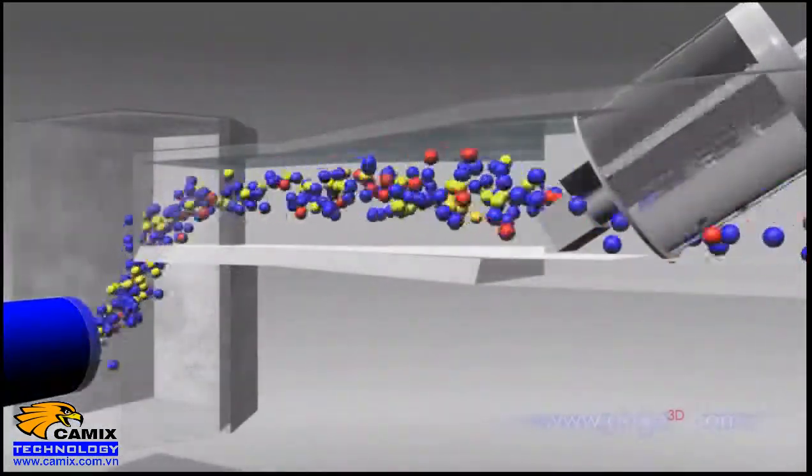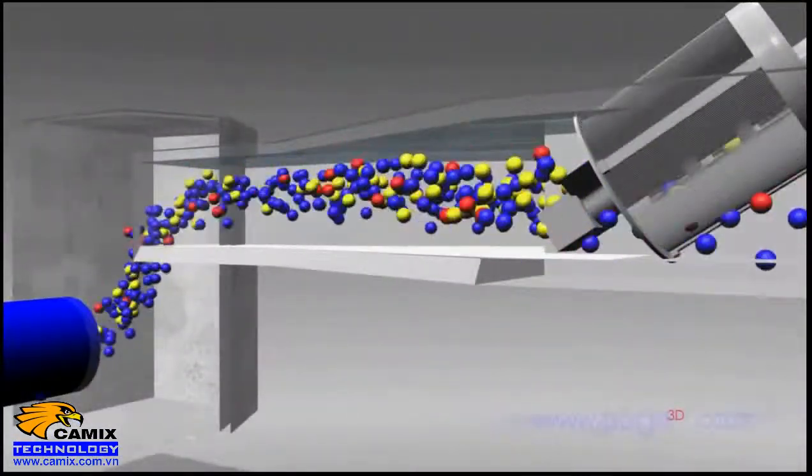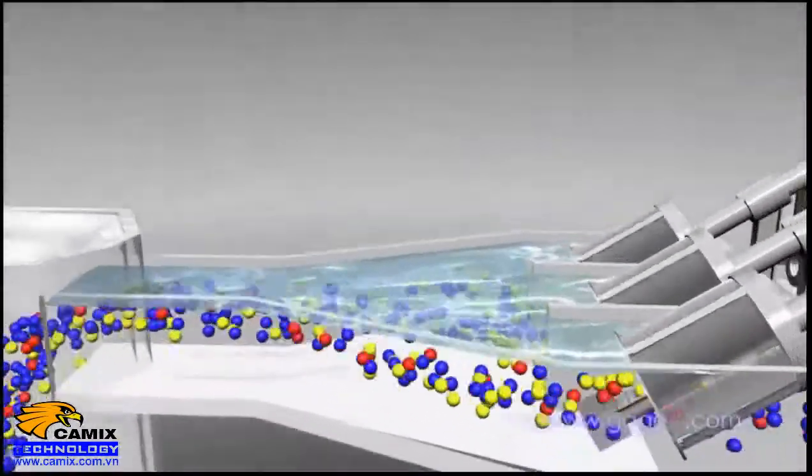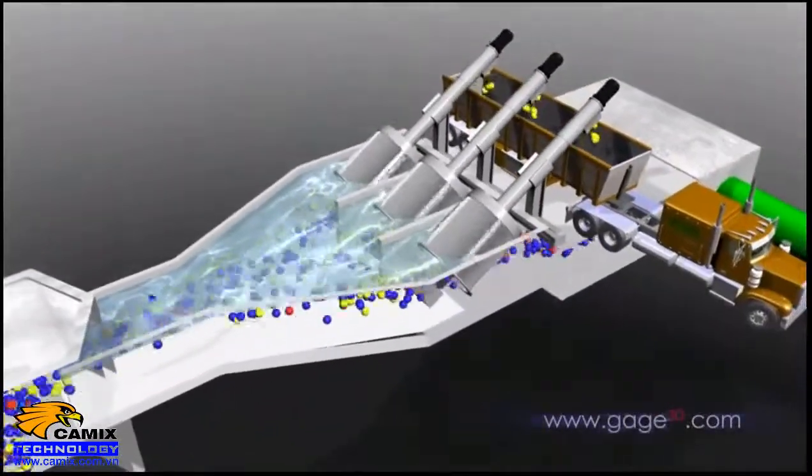After the grit removal chamber, wastewater flows into primary treatment. The first step is a set of fine screens that can remove even smaller debris. Again, the debris is collected and taken to the landfill.